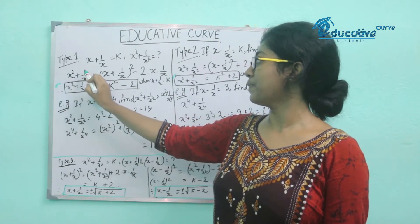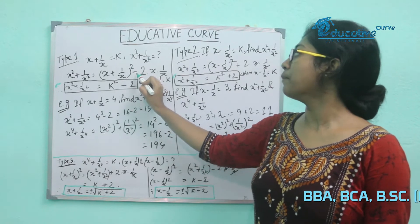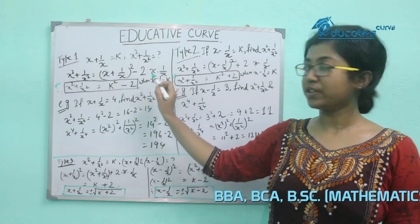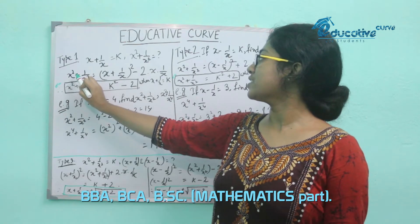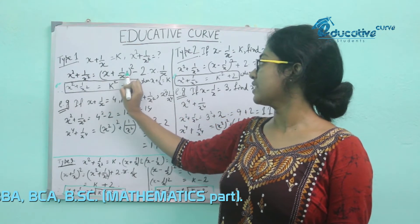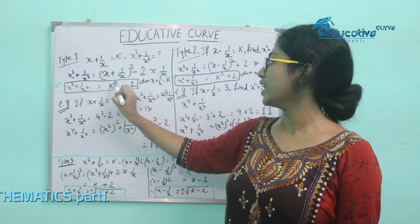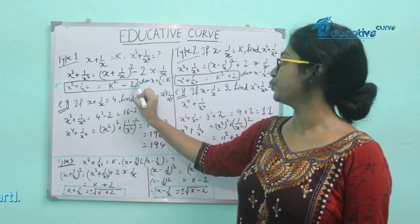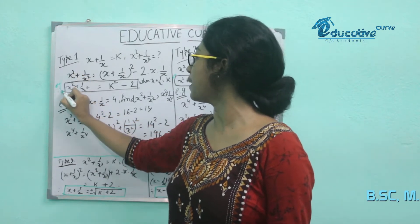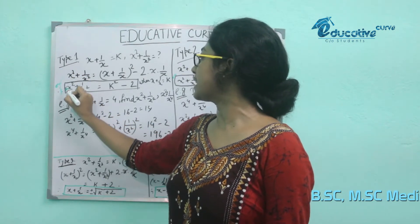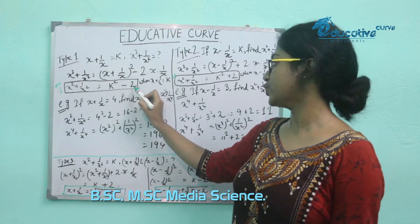x squared plus 1 by x squared is equal to x plus 1 by x, all squared, minus 2 times x times 1 by x. Therefore, x plus 1 by x squared equals k squared minus 2. So x squared plus 1 by x squared is equal to k squared minus 2.